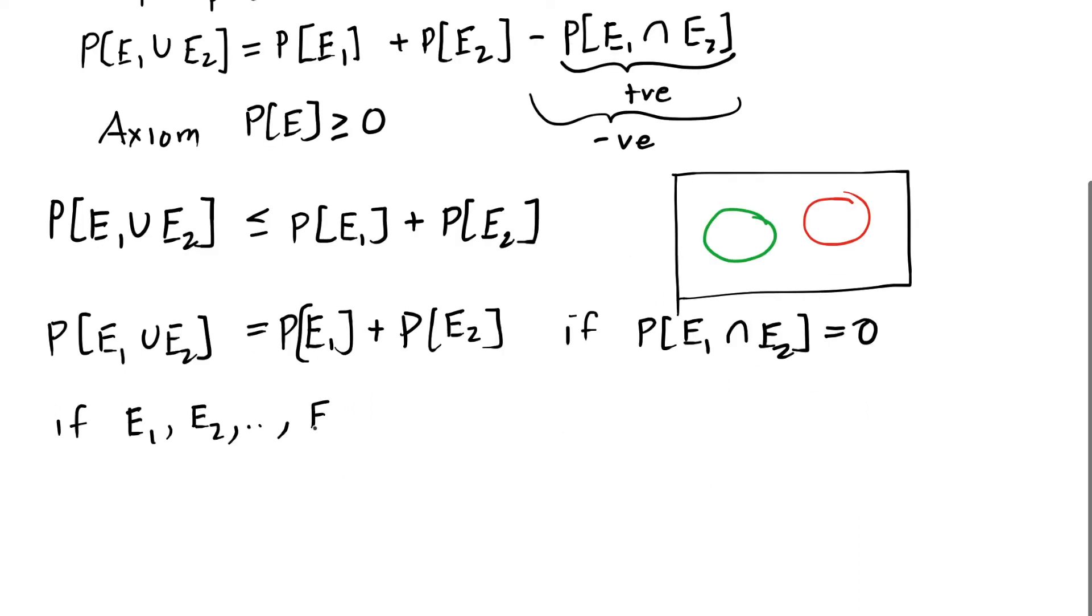In general, if we have lots of events, then the probability of the union of all of those events is less than or equal to the sum of the probabilities of each event individually.